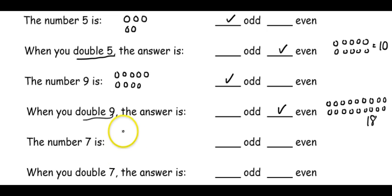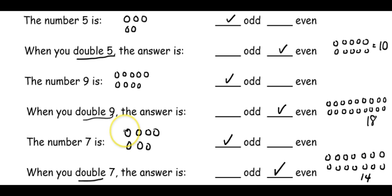And if you think about the number 7, we cannot make 7 using the same number on the top row as we do on the bottom row. So 7 is odd. But if we double 7, meaning 7 on the top row and 7 on the bottom row, we get the number 14. So 14 is even.